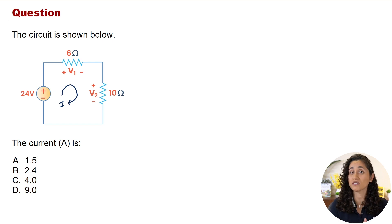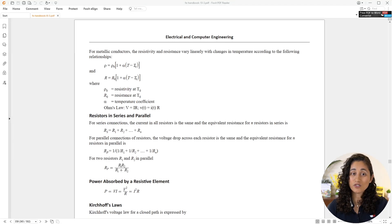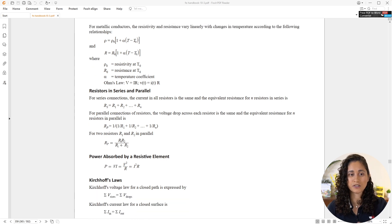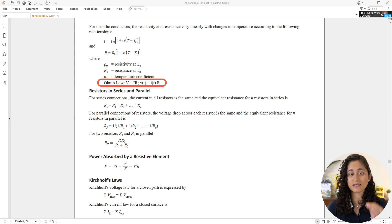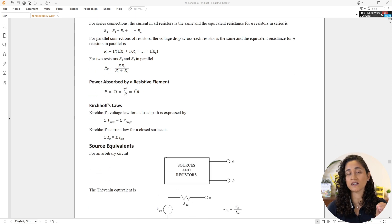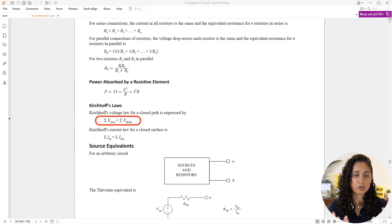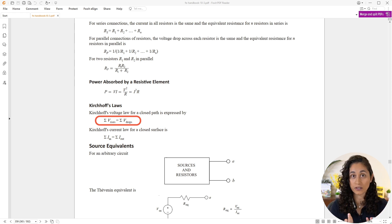Let's go to the reference handbook and look at those equations. Under Electrical and Computer Engineering, we are given Ohm's law: voltage equals current times resistance. Scrolling down, we find the KVL equation, which states that the sum of all voltage gains must equal the sum of all voltage drops for a closed circuit.